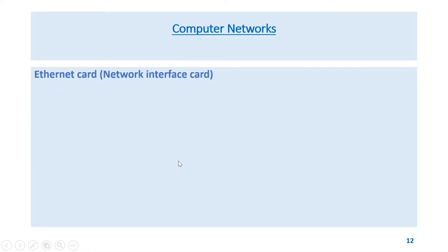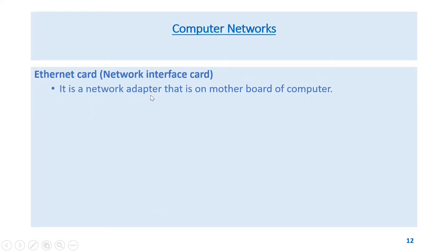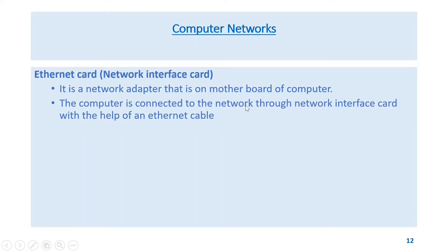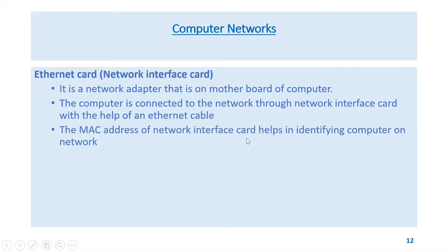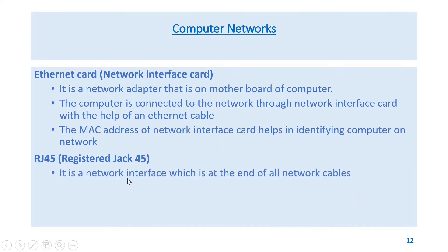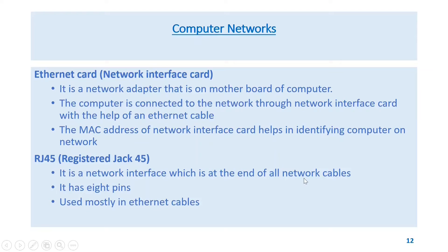Ethernet card or Network Interface Card (NIC) is a network adapter on the motherboard of a computer. The computer is connected to the network through the NIC with the help of an ethernet cable. The MAC address of the NIC helps in identifying the computer on the network. RJ45 (Registered Jack 45) is a network interface at the end of all network cables. It has eight pins and is used mostly in ethernet cables.